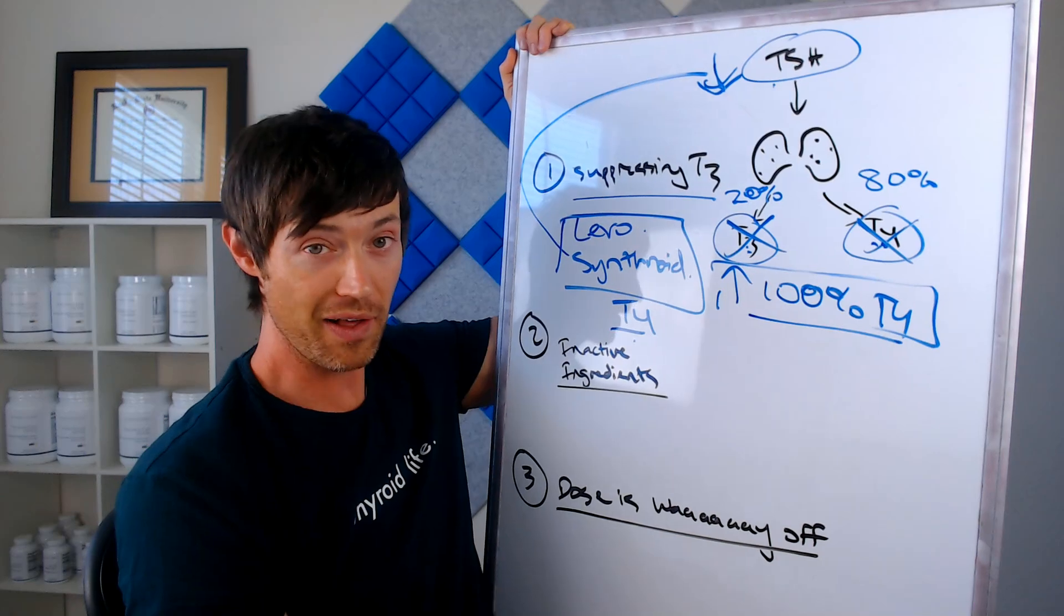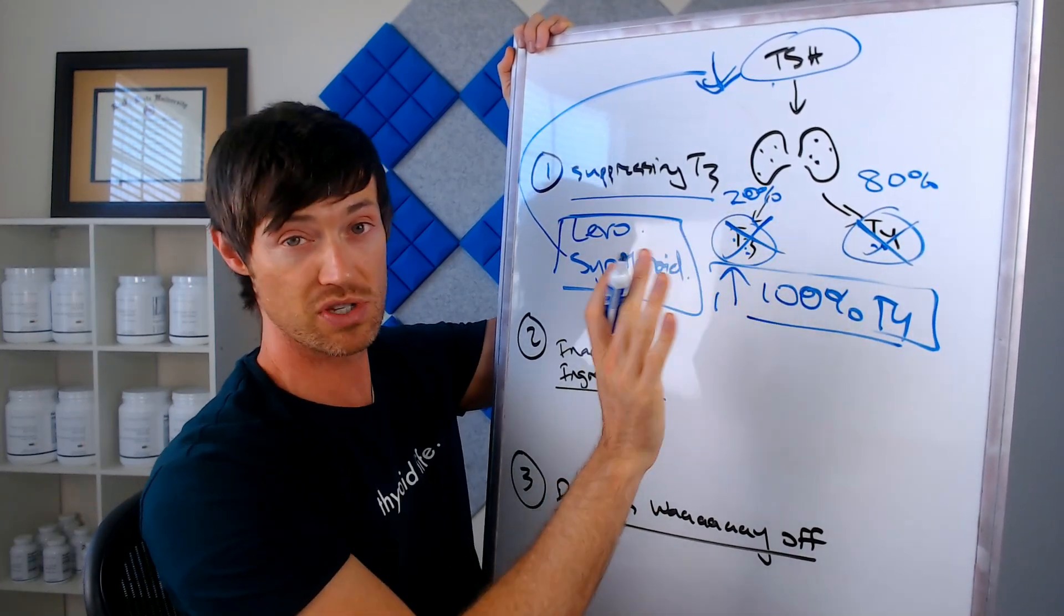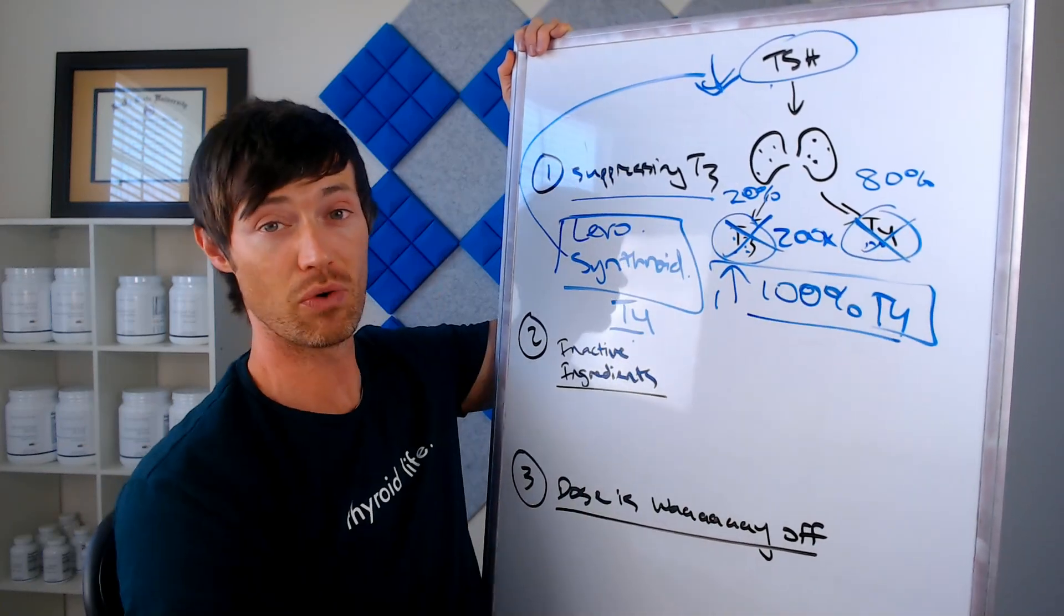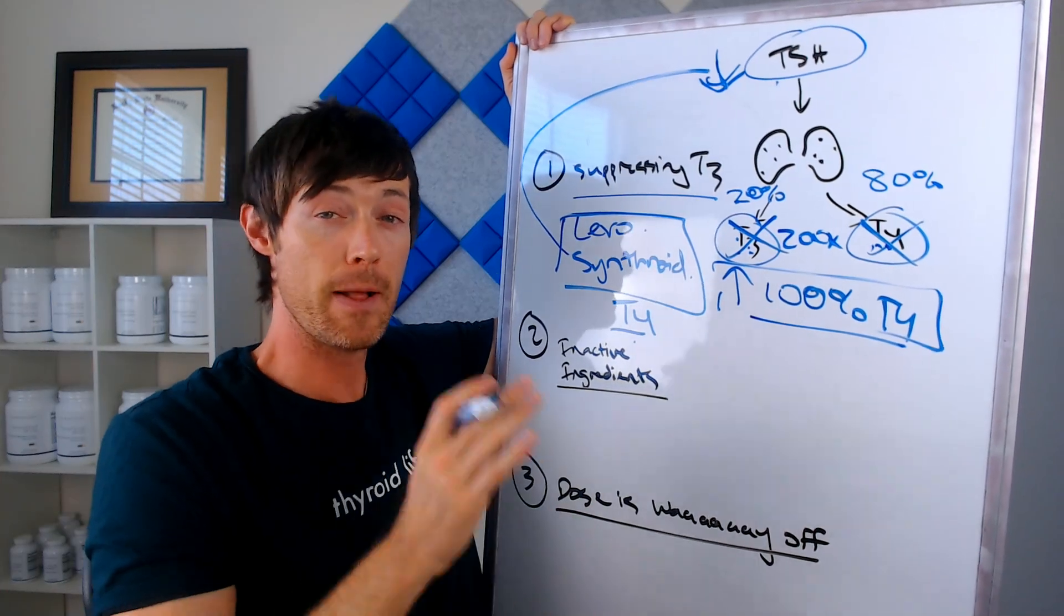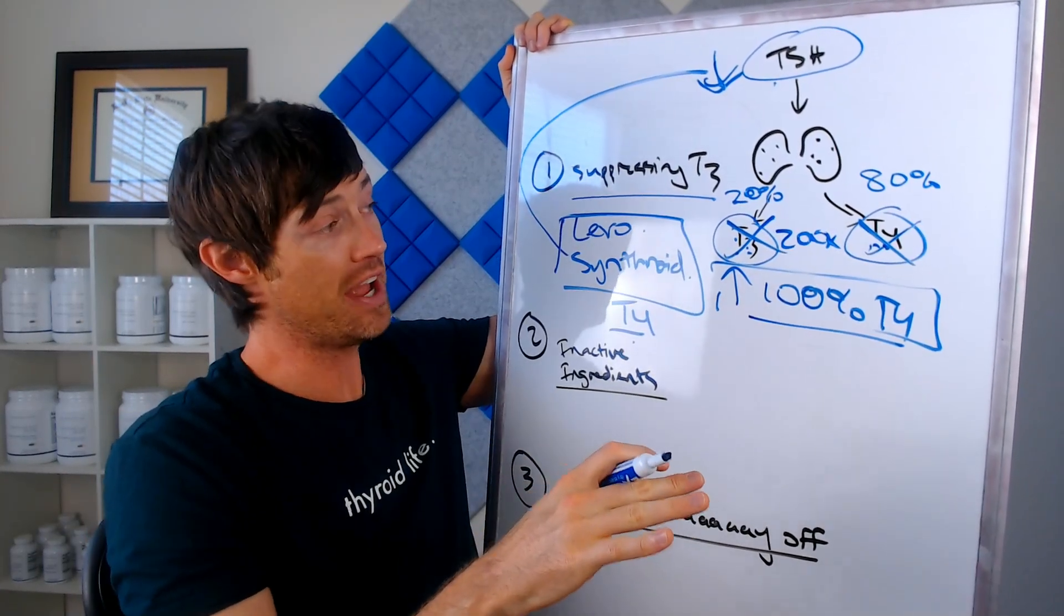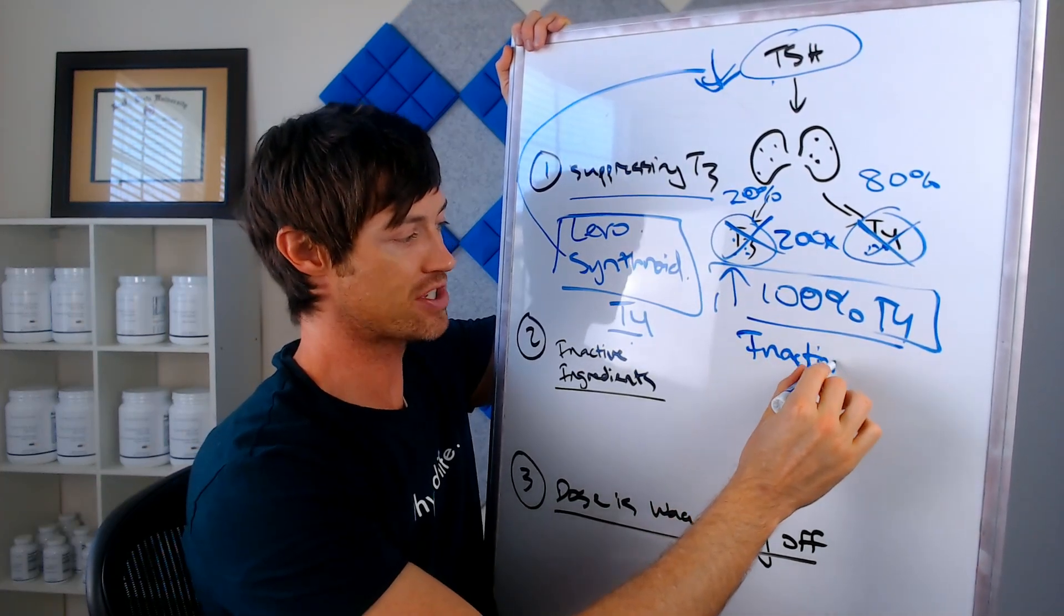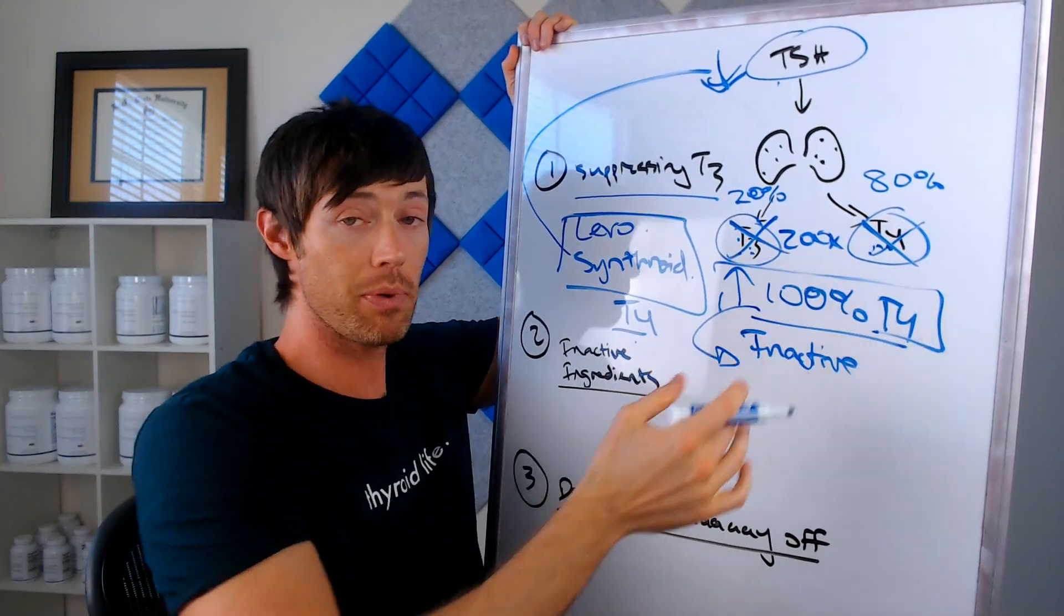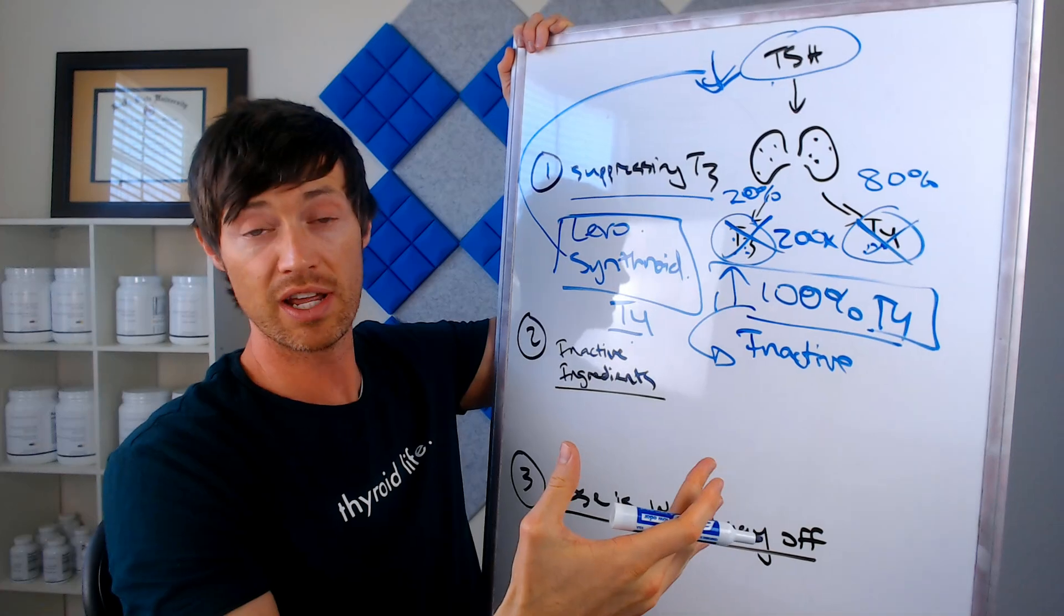So why is that a problem? Well, it turns out that T3, your body only produces about 20% of this, but this is about 200 times more active than T4. So what you are doing as you take thyroid medication is you are suppressing the most active thyroid hormone in your body by far, and you're replacing it with T4, which is inactive. So what your body has to do is it has to turn that T4 into T3.